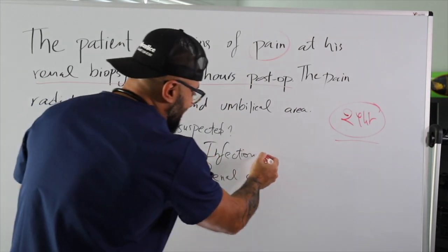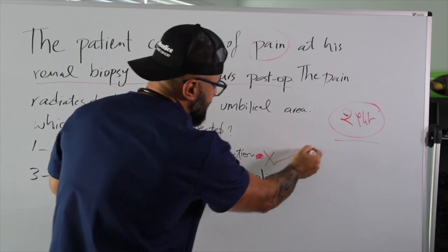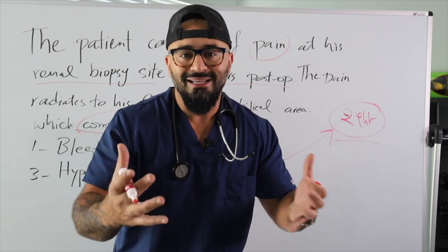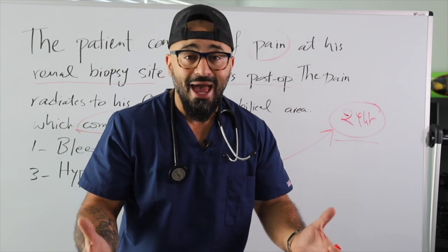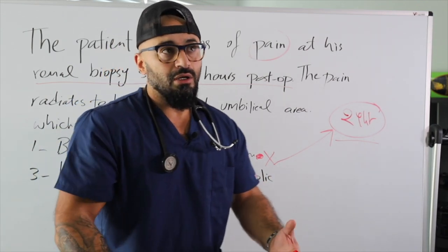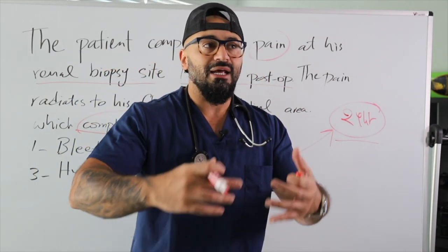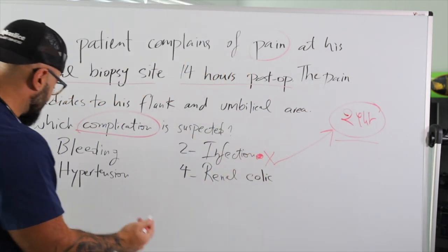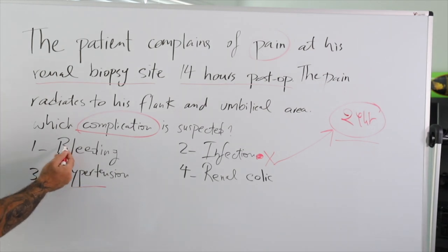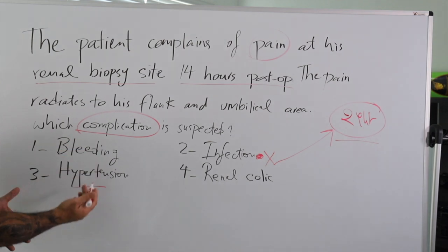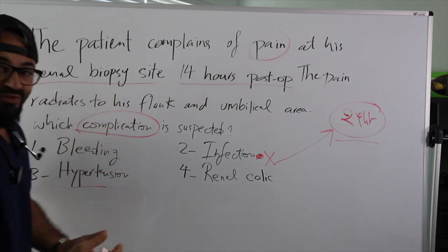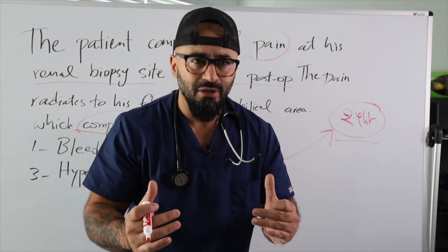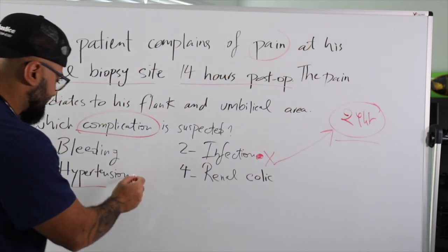The second option is infection. This is wrong, especially because it's less than 24 hours. You need at least 24 to 48 hours for the body to react — for the wound to get contaminated and the body to start forming some type of infection. So definitely not infection. Hypertension — if bleeding is the number one complication for renal biopsy and the patient is bleeding from the inside, the blood pressure should drop, not go up. So hypertension is definitely a wrong answer.